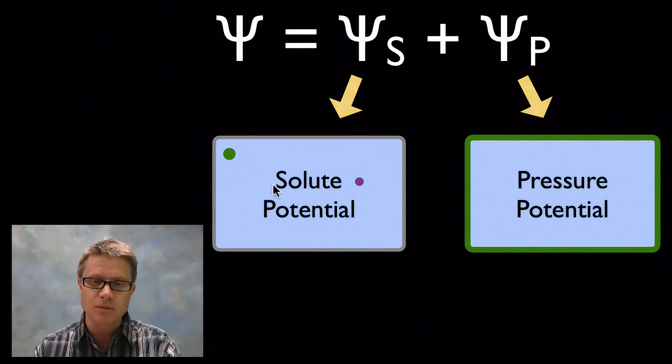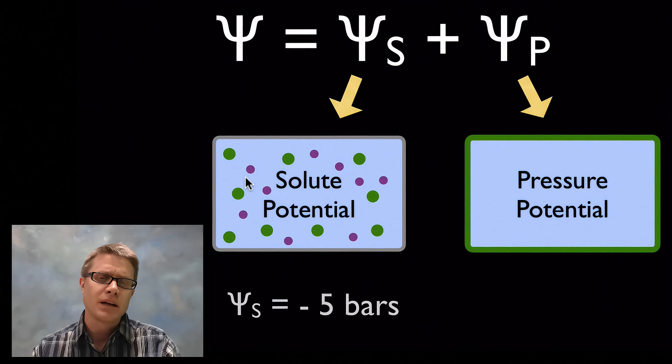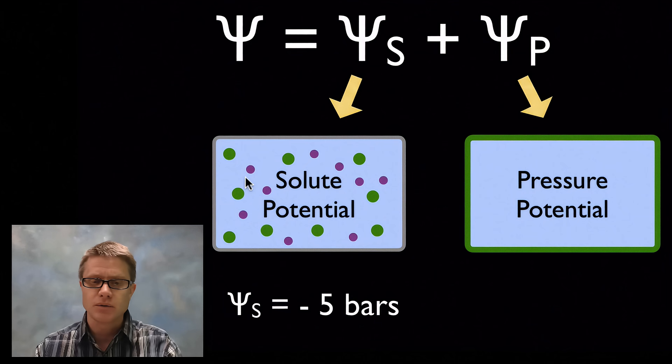Let's say we add a whole bunch of solutes to it. That's really going to decrease that solute potential, and so maybe it's going to be around negative five bars. So that's due to osmosis or that push of osmosis.